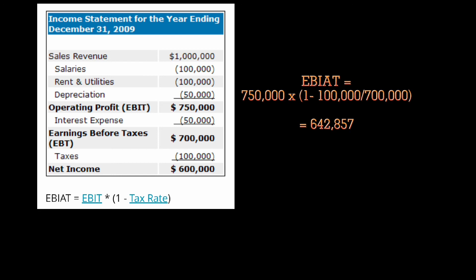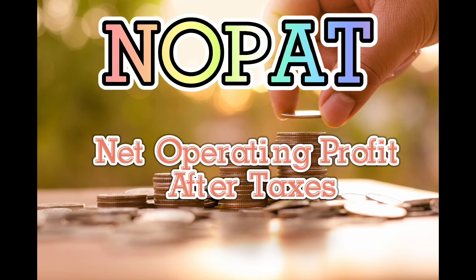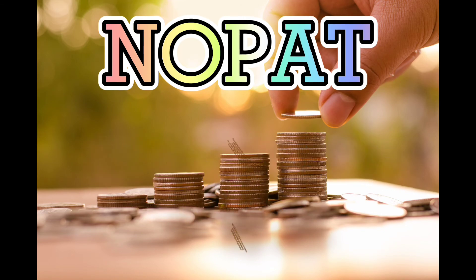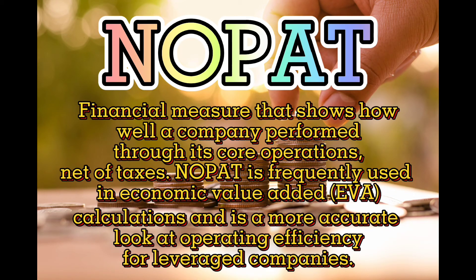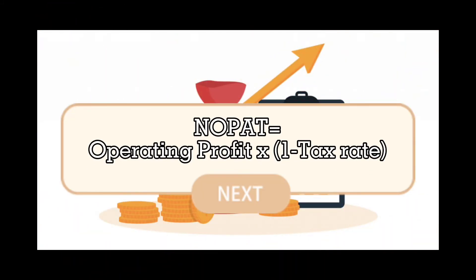The next one is NOPAT, or the Net Operating Profit After Tax. Net Operating Profit After Tax is a financial measure that shows how well a company performed through its core operations, net of taxes. NOPAT is frequently used in Economic Value Added (EVA) calculations and is a more accurate look at operating efficiency for leveraged companies. The NOPAT formula is: operating profit times (1 minus tax rate).